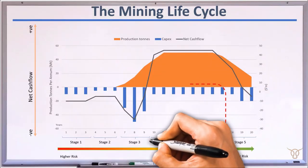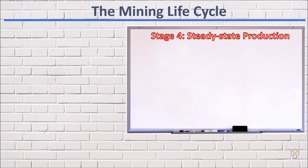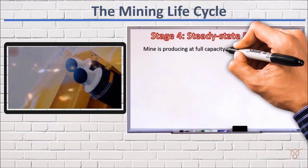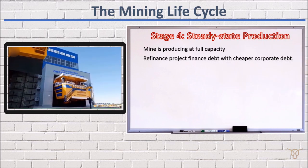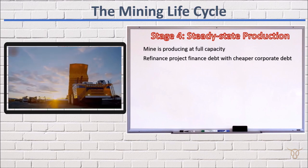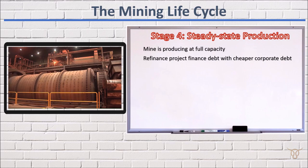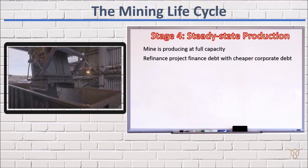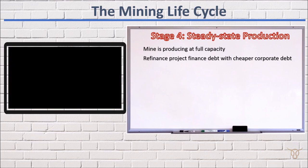Stage 4: Steady State Production. During this stage, the mine is up and running and producing at full capacity. Sponsors would typically refinance the project finance debt that was previously put in place. Project financing facilities usually carry high rates of interest to compensate lenders for the inherent risk of constructing a new project. Now that the project is up and running, it would be significantly de-risked, and for this reason a mining company would want to refinance its project finance debt into new, cheaper corporate facilities to reflect the lower risk of the mine.